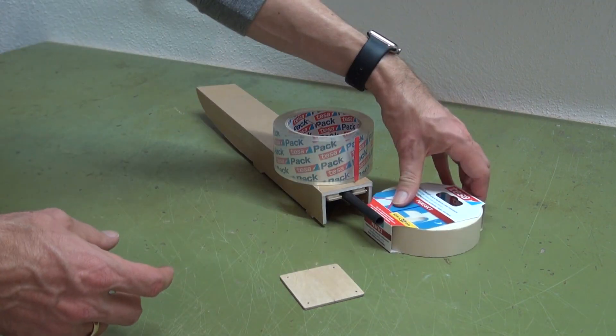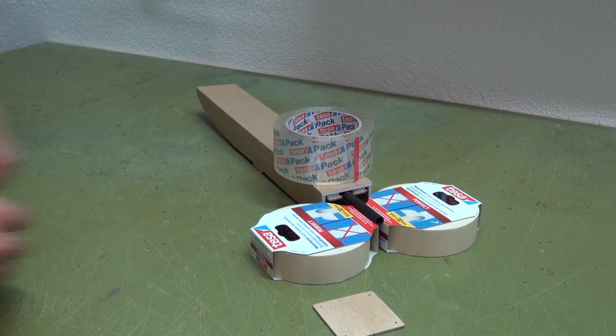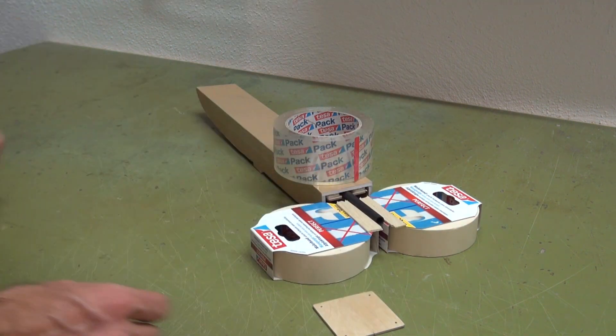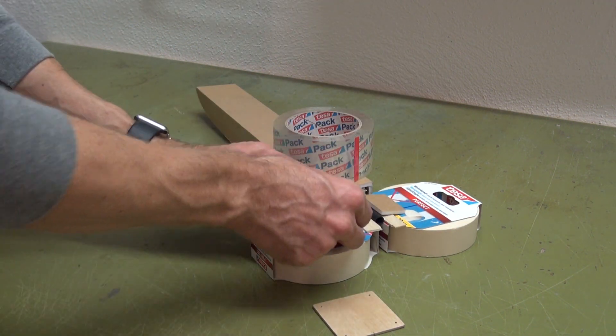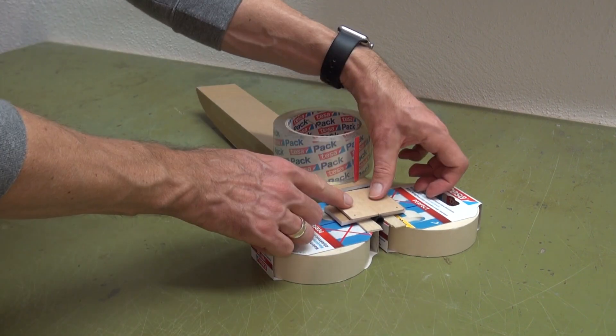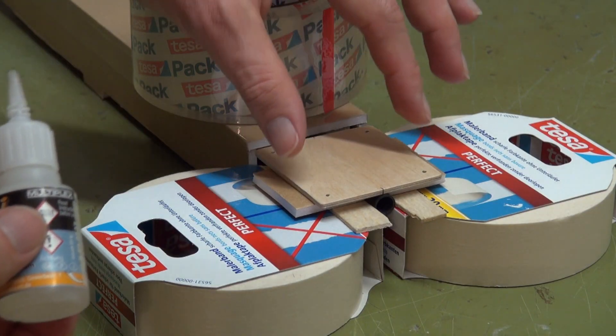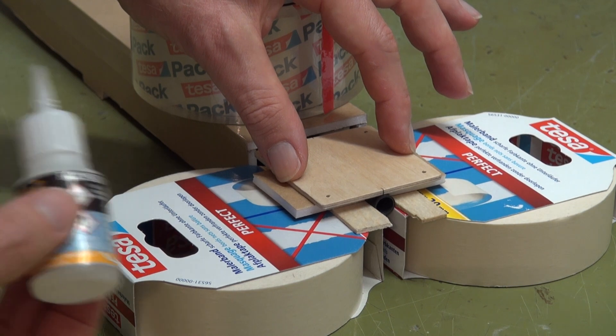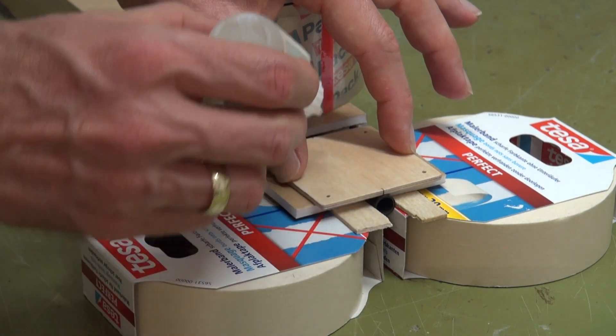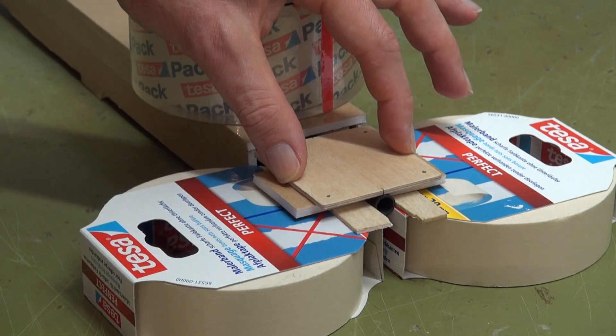In the next step we'll fix the base plate to the carbon fiber tube. Adjust the base plate to be perfectly horizontal by supporting it on both sides. A center mark on the plywood and the carbon fiber tube will help to position the part. Use a drop of CA glue in the back and front to fix the plate in position.